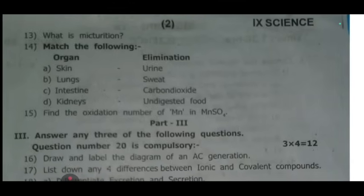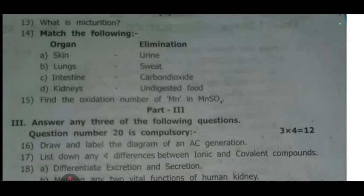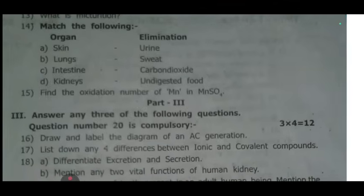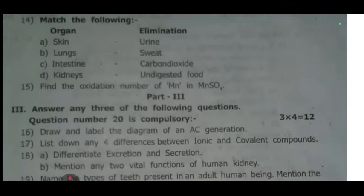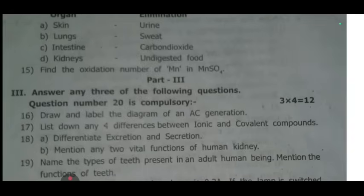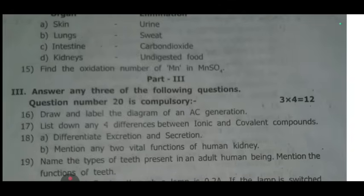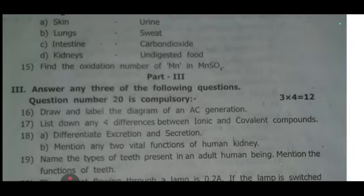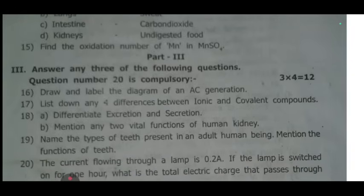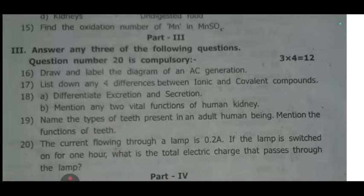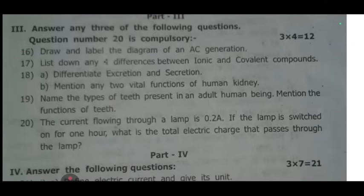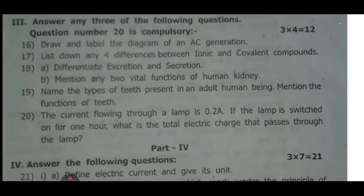Part three — five mark questions. Question number 21 is compulsory. Any three from the remaining. 16th one: draw and label the diagram of an AC generator. 17th one: list down any four differences between ionic and covalent compounds. 18th one: differentiate excretion and secretion; mention any two vital functions of the human kidney. 19th one: name the types of teeth present in an adult human being and mention the functions of each. 20th one: the current flowing through a lamp is 0.2 amperes — if the lamp is switched on for one hour, what is the total electric charge that passes through the lamp?